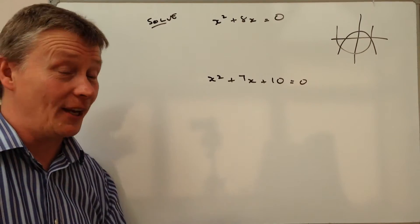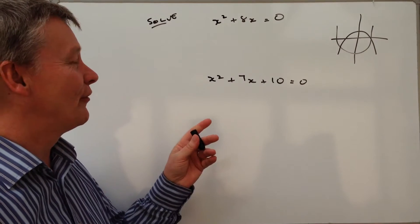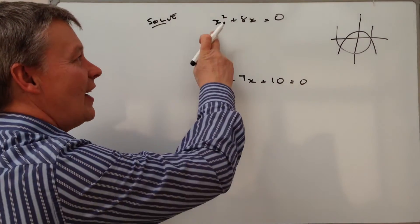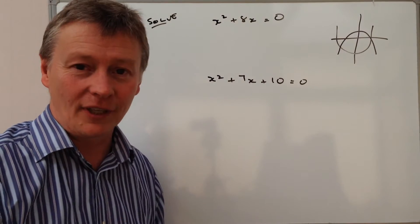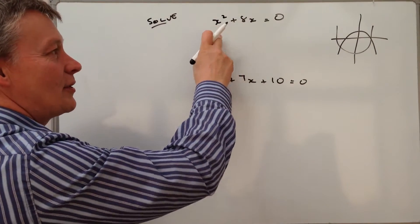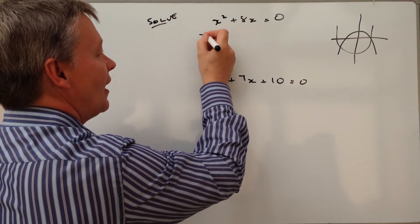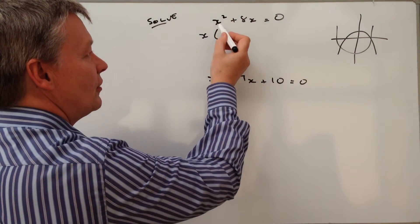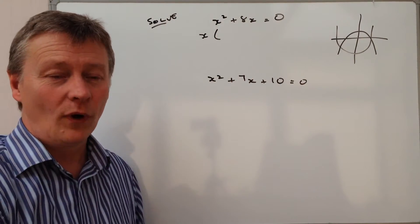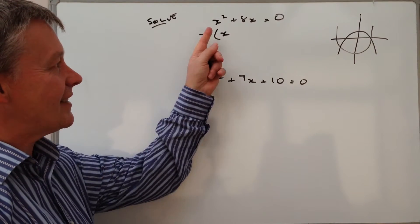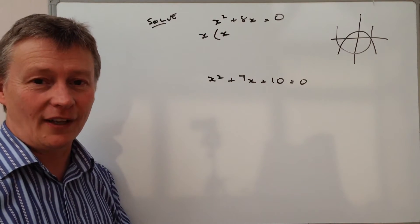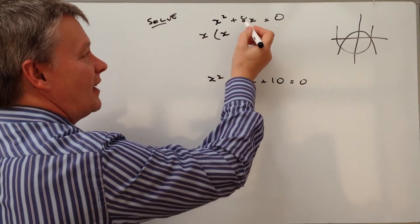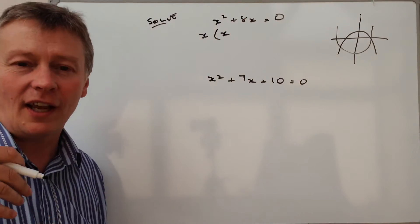With this, I'm going to take x out of this equation. If I do that, I can take x out and multiply by a term in the brackets. What am I going to do to x to get x squared? I simply multiply it by x, because x times x is x squared. What do I do to x to get 8x? I need to multiply by 8 on its own.